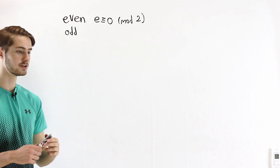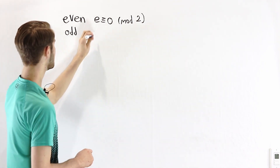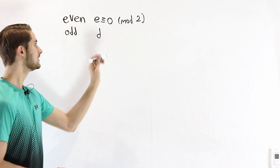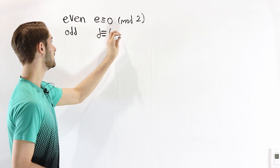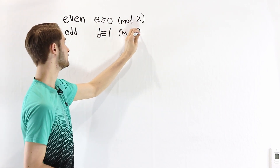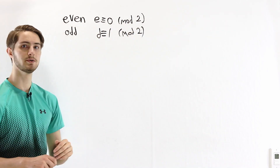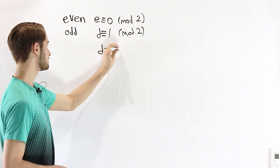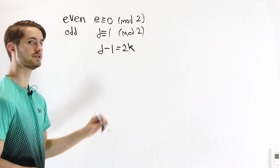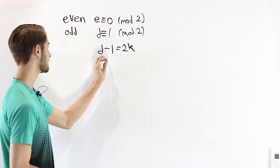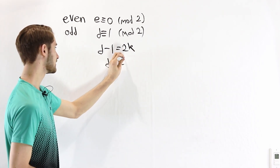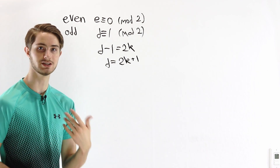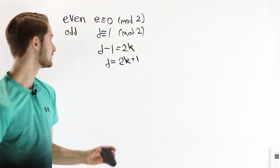On the other hand, for an odd number, which we'll denote by the letter D so that it doesn't look like a 0, a number is odd if it's congruent to 1 mod 2. By the definition of modular congruence, this means D minus 1 is some multiple of 2. If we add 1 on both sides, we see that our odd number D is equal to 2k plus 1, which is what we generally expect an odd number to look like.